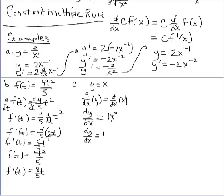Had the original function been y equals 7x, you could use the constant multiple rule or just go straight to the power rule. In any case, the rate of change is constant on y equals 7x and it's going to be 7. Now let's go back to the constant function we started with. Let's say we have y equals 5. If asked what y prime is, easy enough — y prime is going to be 0. The slope or rate of change on a horizontal line is 0.